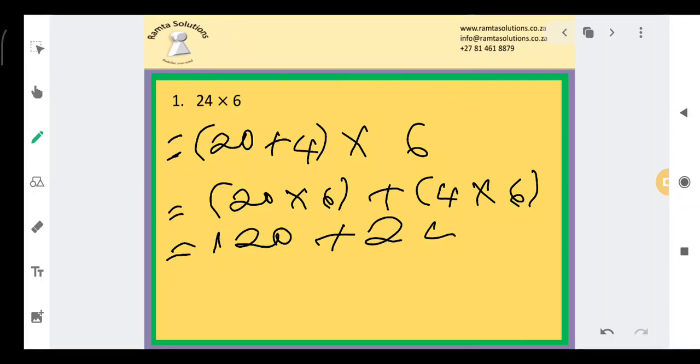It's 120 plus 4 times 6. The last time I checked, it was 24. I'm not sure if it changed over time, but yes, it's 24. Now our answer, 120 plus 24, would give us 144.